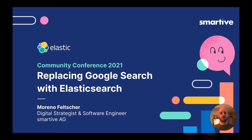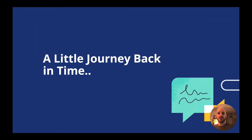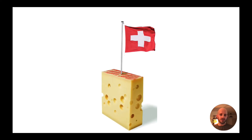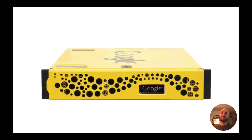Hello everyone, my name is Moreno and today I'm going to take you on a little journey back in time. We started off in the year 2002 when Google announced a new search product which looked a little bit like this. This oddly shaped box was actually the server for their search solution called Google Search Appliance.